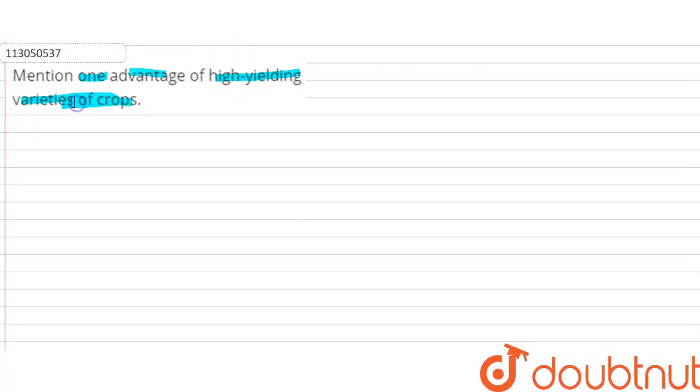If we talk about high yielding variety of crop, what is the advantage? This is crop A - high yield, which will produce more products, more seeds, but will be less disease resistant.